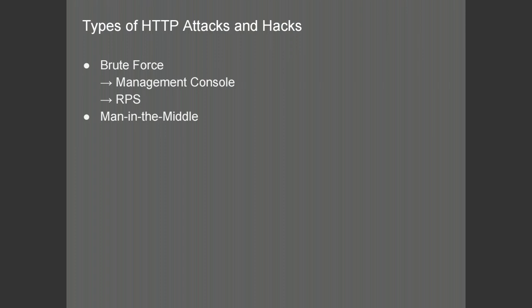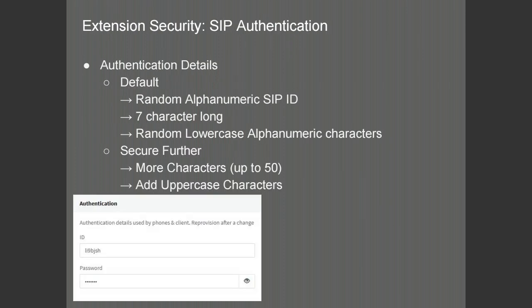We will also see later on some man in the middle attacks. The extension security is one of the main points of entry into the PBX — people will try to guess their way as an extension into the PBX. We have now made the SIP ID into a random alphanumeric SIP ID. It's not the same as the extension number. The password will remain a seven-character long alphanumeric lowercase string, but you can secure it further by adding more characters up to 50 characters and also adding uppercase to further the complexity.